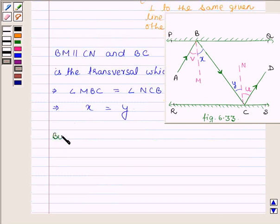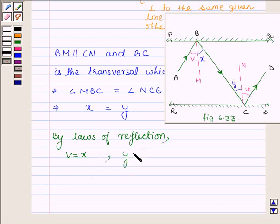Now by the laws of reflection we know that angle of incidence is equal to the angle of reflection, that is V is equal to X. Similarly Y is equal to U, since angle of incidence is equal to the angle of reflection.